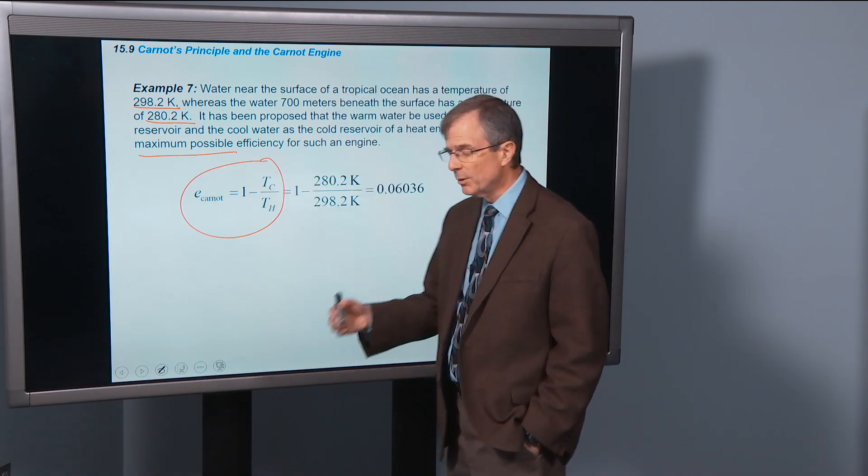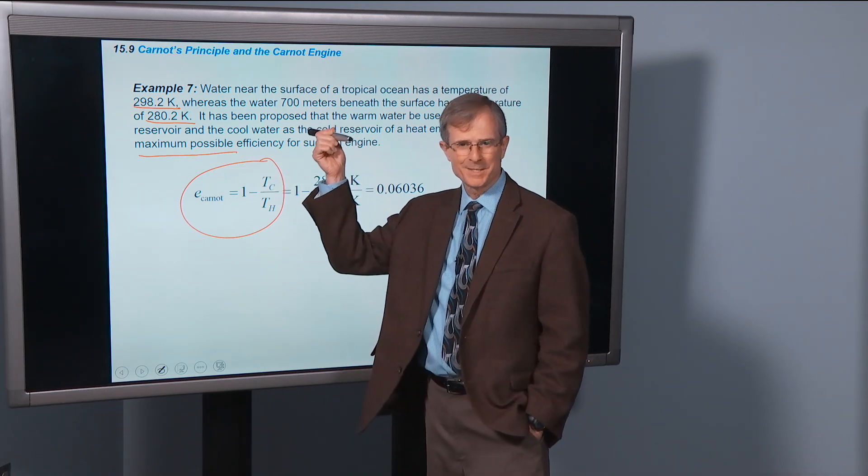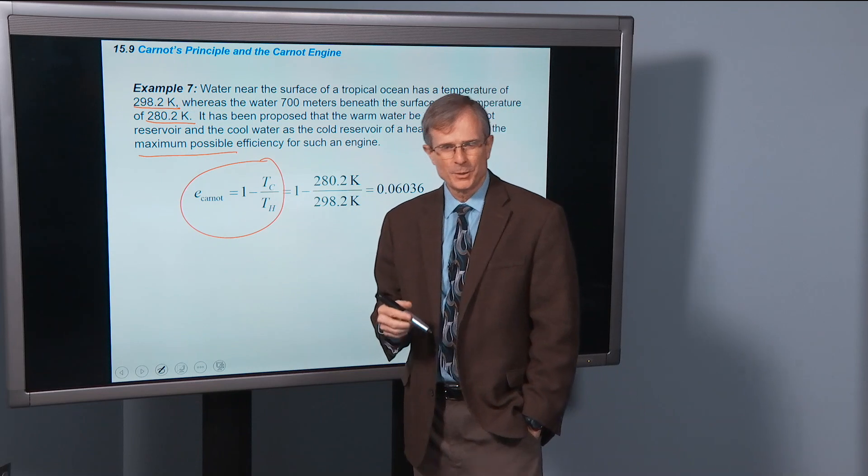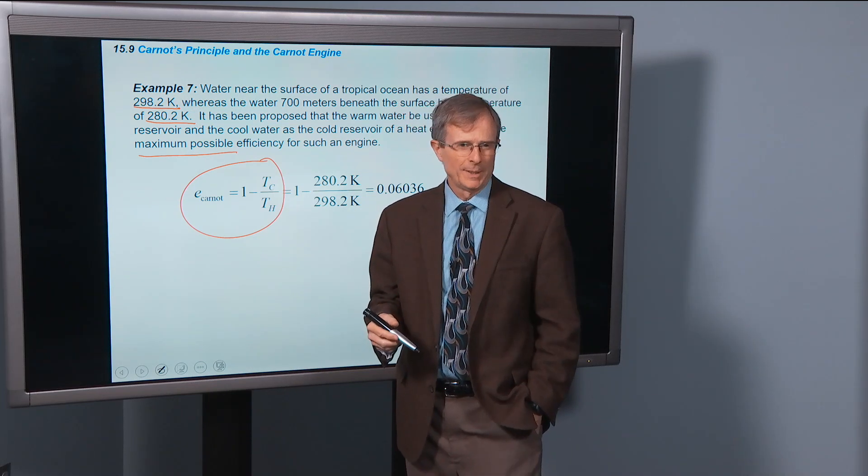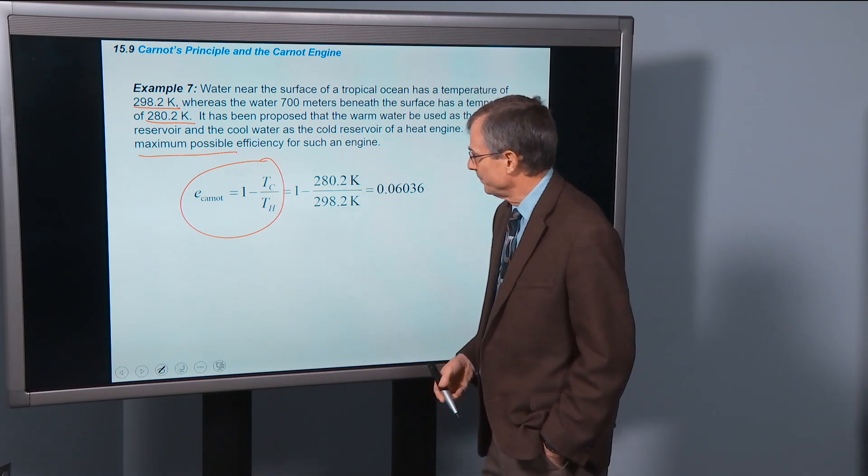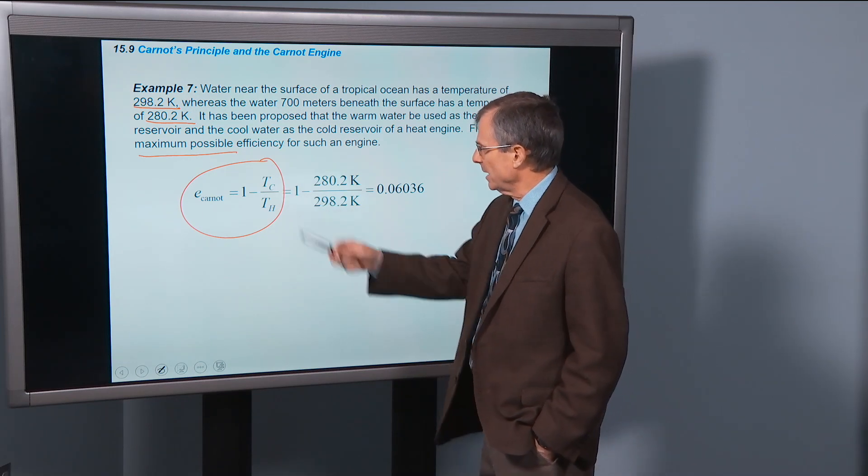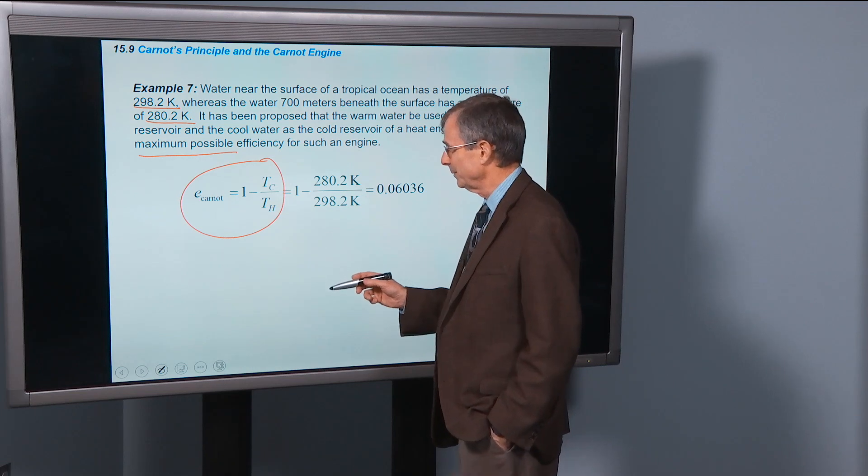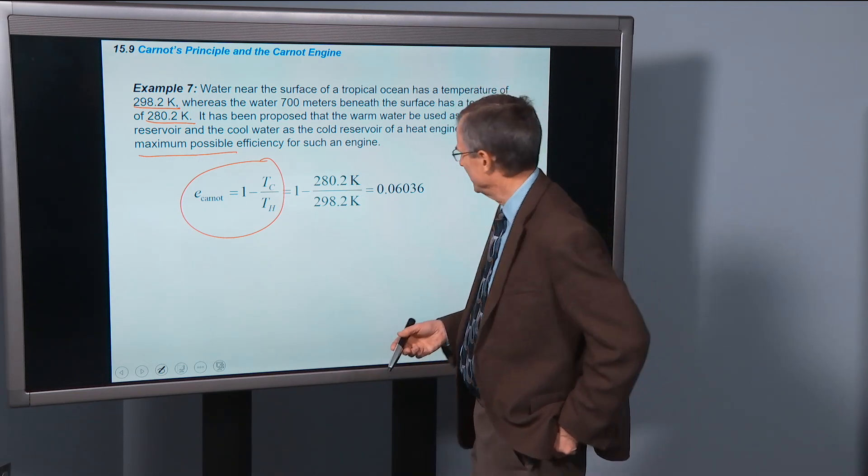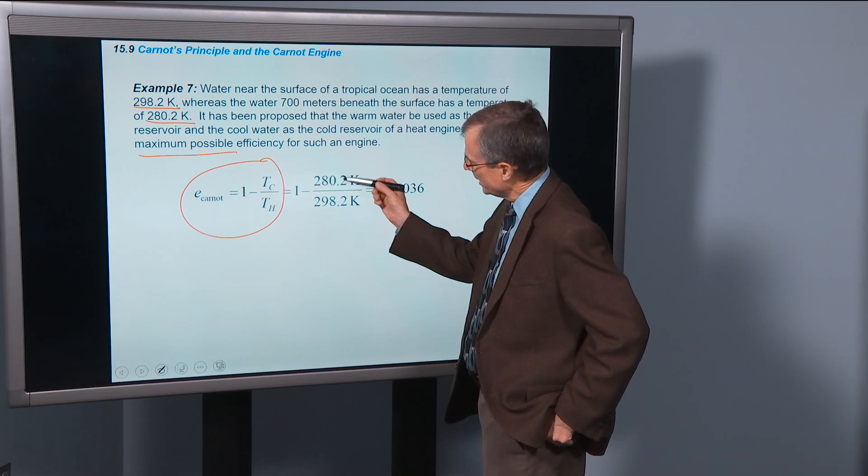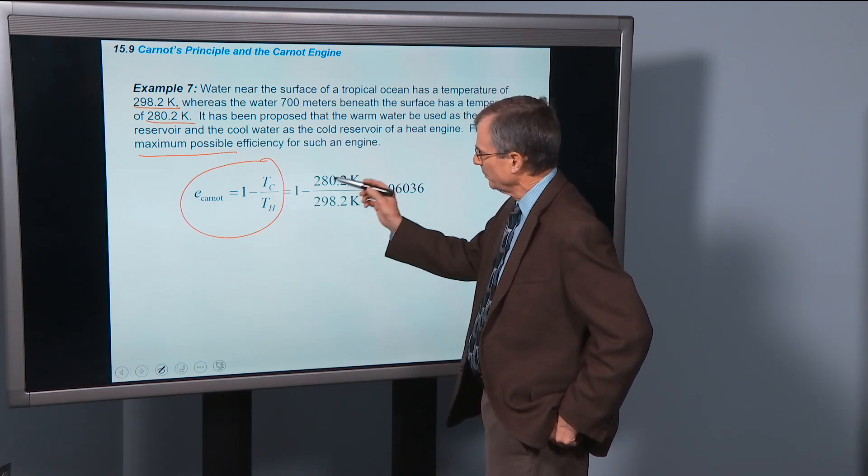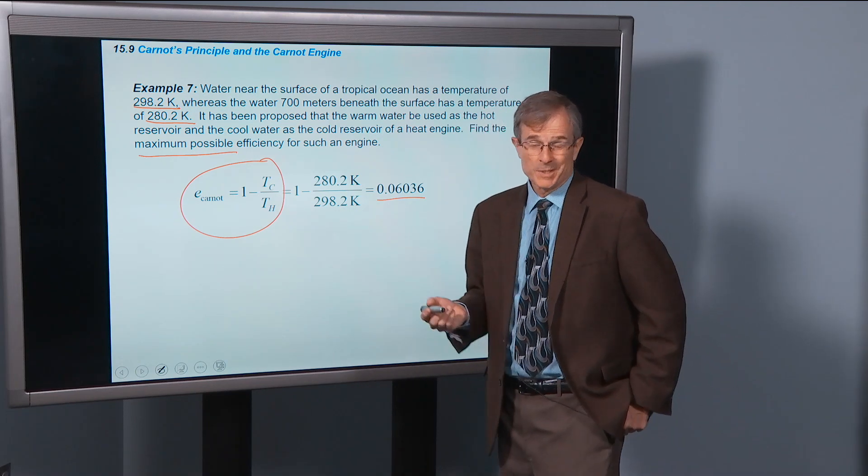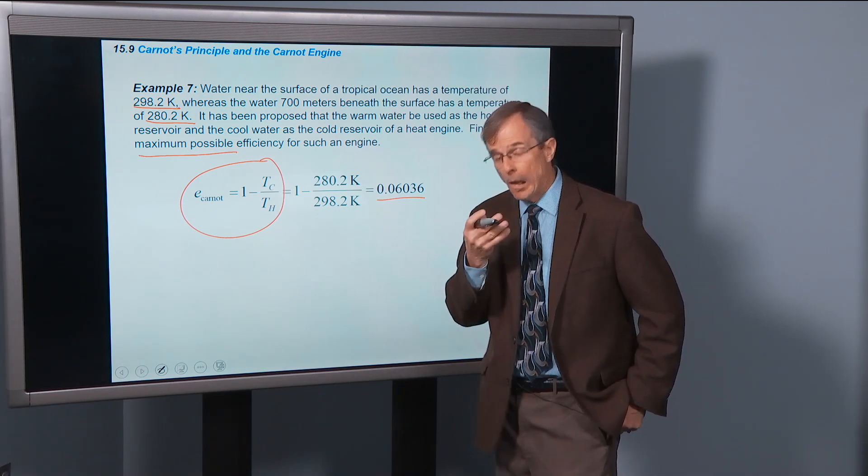For any irreversible process, which this would probably be since it's practical, since there's no reversible process that you can actually do that I know of, this just sets an upper limit on the efficiency. But it's not a very efficient, it doesn't have the potential to be a very efficient engine. Because look at these two numbers are not that different from each other. 1 minus 280 over 298. So that's an efficiency of only 6%. That's pretty ho-hum.